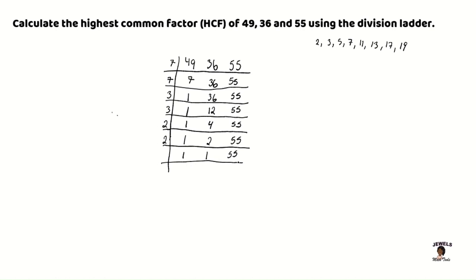So now we're looking for a prime number. We can use 11 or 5. So I'm going to use 11. 11 divides into 55 five times. And 5 divides into 5 once. So once I've reached 1 with all of my numbers then I know that I have completely factorized all of these numbers.